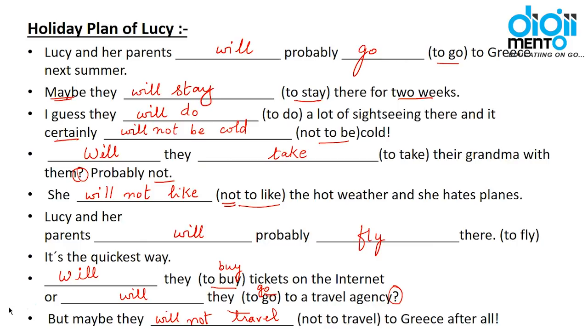You can practice more sentences this way — take any sentence and change it into all three forms: positive, negative, and interrogative, for more practice. After this, we will be doing our future continuous tense. Thank you.